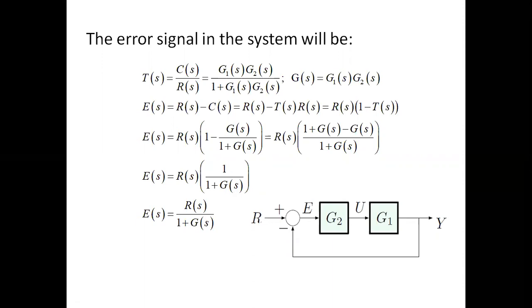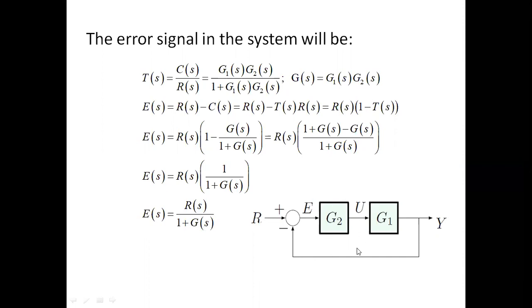So finally we have got the expression for error in the Laplace domain: E(s) = R(s) / (1 + G(s)), where G(s) is the system transfer function.